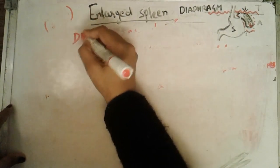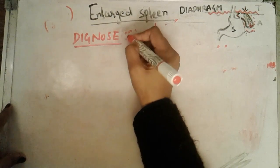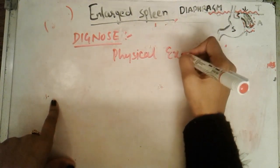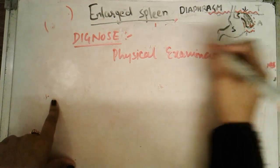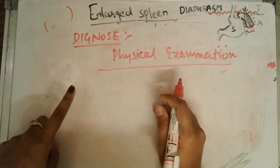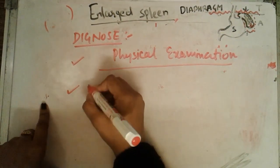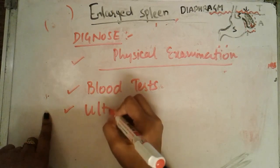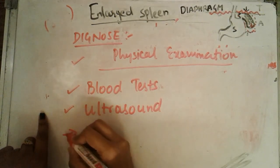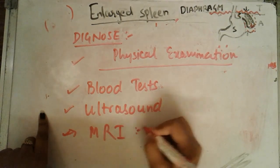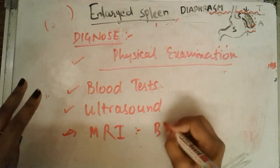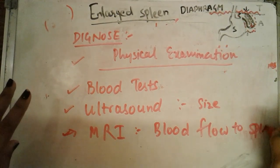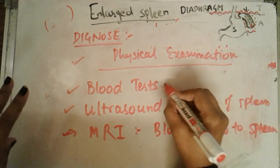To diagnose an enlarged spleen, doctors usually start with a physical examination, checking the upper left side of your body to identify the exact location and size of the spleen. The second test is a blood test to check RBC and WBC counts. The doctor can also order an ultrasound or CT scan to identify the exact size of the spleen. Finally, MRI — magnetic resonance imaging — is used to check the blood flow through the spleen.